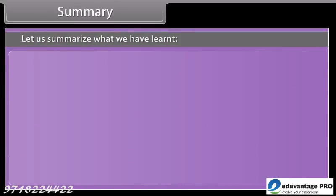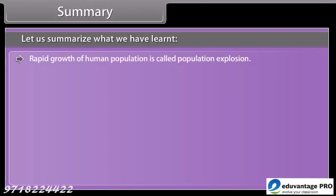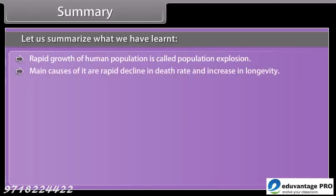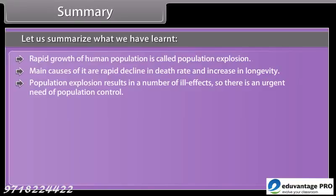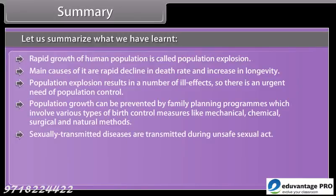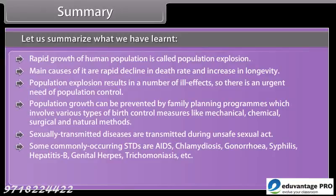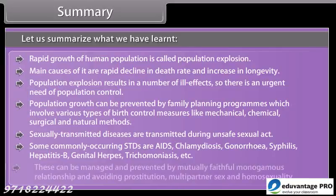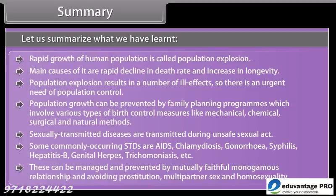Rapid growth of human population is called population explosion. The main causes are a rapid decline in death rate and increase in longevity. Population explosion results in a number of ill effects, so there is an urgent need for population control. Population growth can be prevented by family planning programs involving mechanical, chemical, surgical, and natural birth control methods. Sexually transmitted diseases — including AIDS, Chlamydiosis, Gonorrhea, Syphilis, Hepatitis B, Genital Herpes, and Trichomoniasis — are transmitted during unsafe sexual acts. These can be managed and prevented by mutually faithful monogamous relationships and avoiding multi-partner sex.